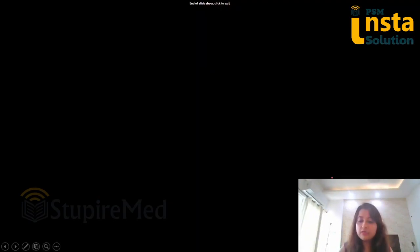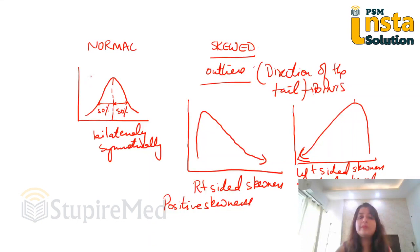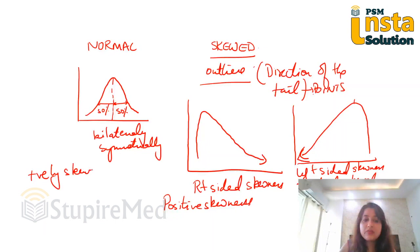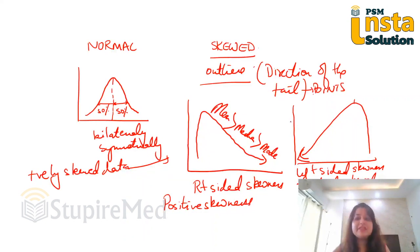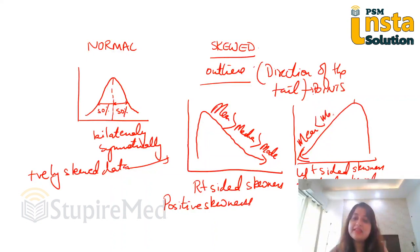Now two important points you have to remember: for a positively skewed data, my mean is more than median is more than mode. And for a left-sided skewness or negatively skewed data, my mean is less than median is less than mode.